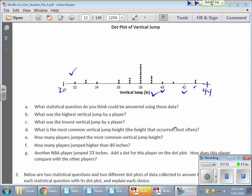And then it goes into, what is the highest vertical jump? And the highest vertical jump, you're just going to go all the way over to the right and find that value. And I'm between 42 and 44. So that answer is going to be 43 inches.